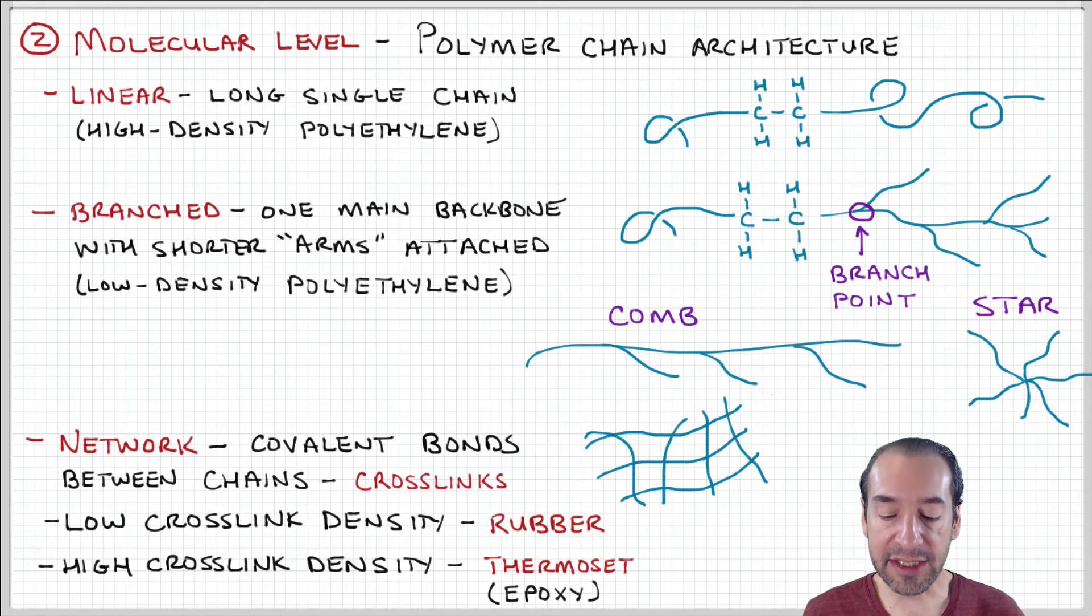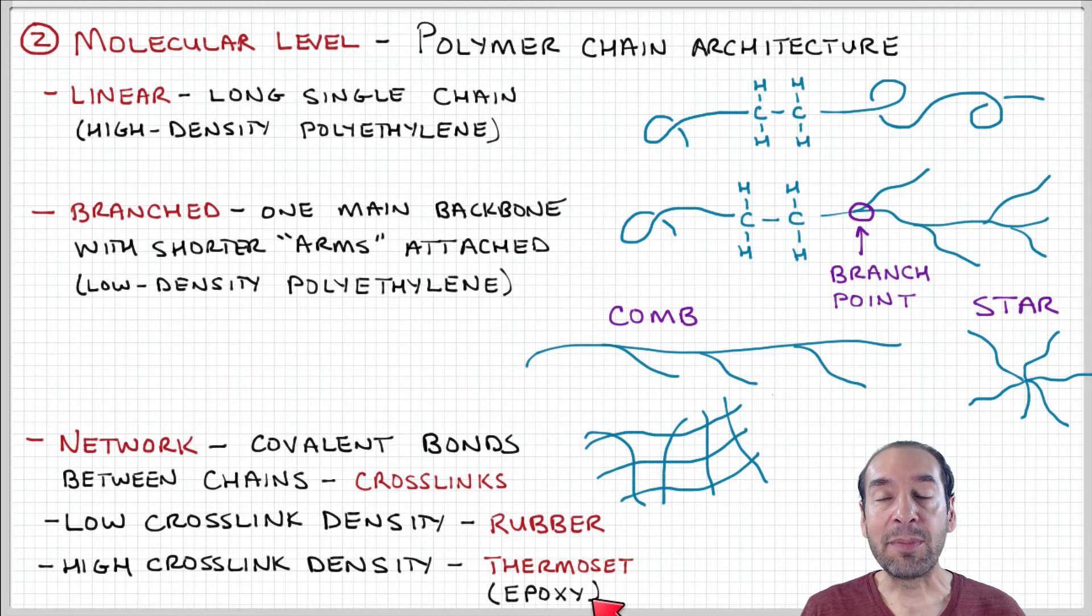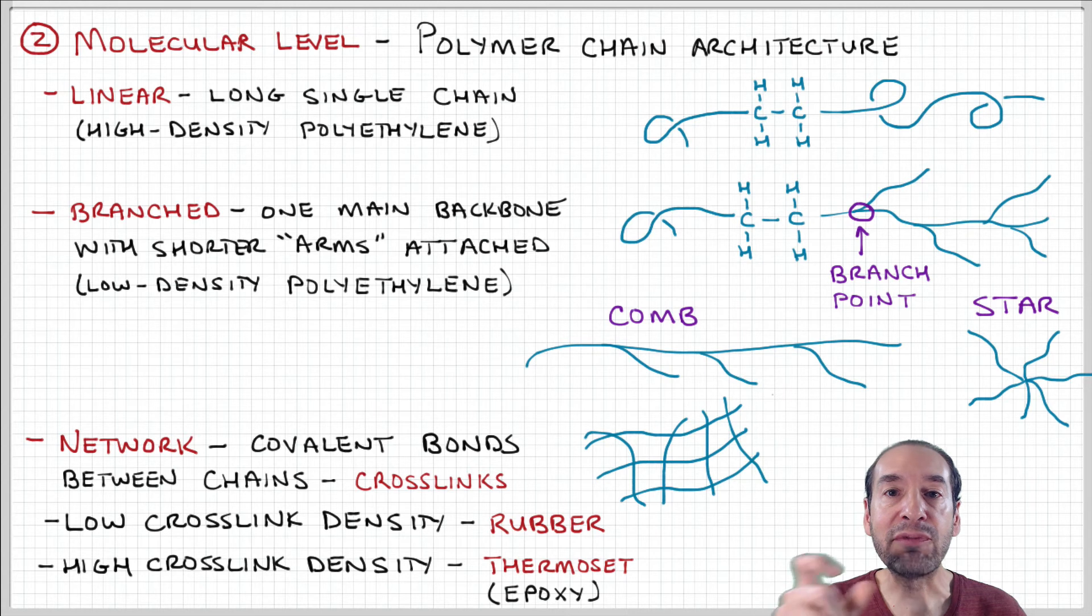If there's a high cross-link density with very rigid attachment, the material is very rigid—that's called a thermoset. Epoxies are an example. Five-minute epoxy has two components: the resin, which is the polymer, and the cross-linker, which is a cross-linking agent. You mix those together, and a reaction forms this very rigid network that can't be deformed.